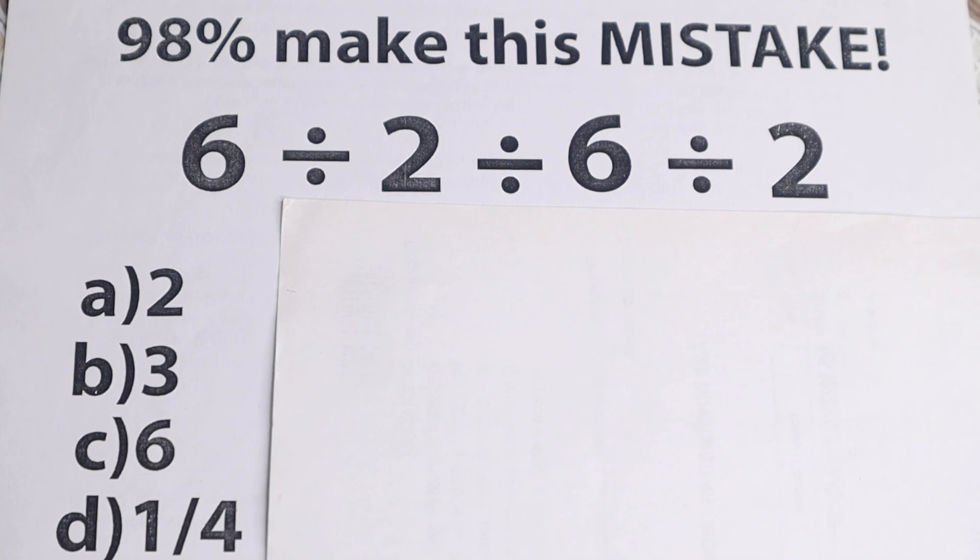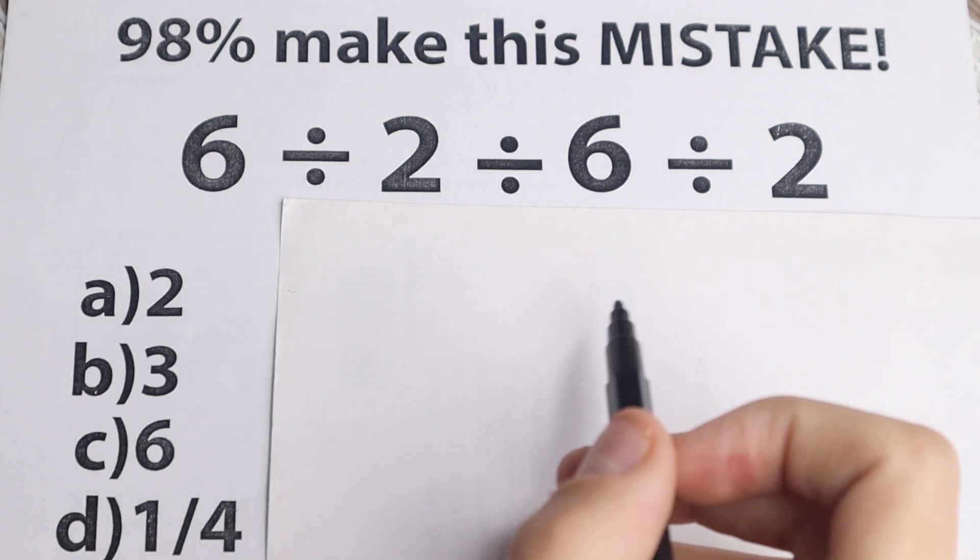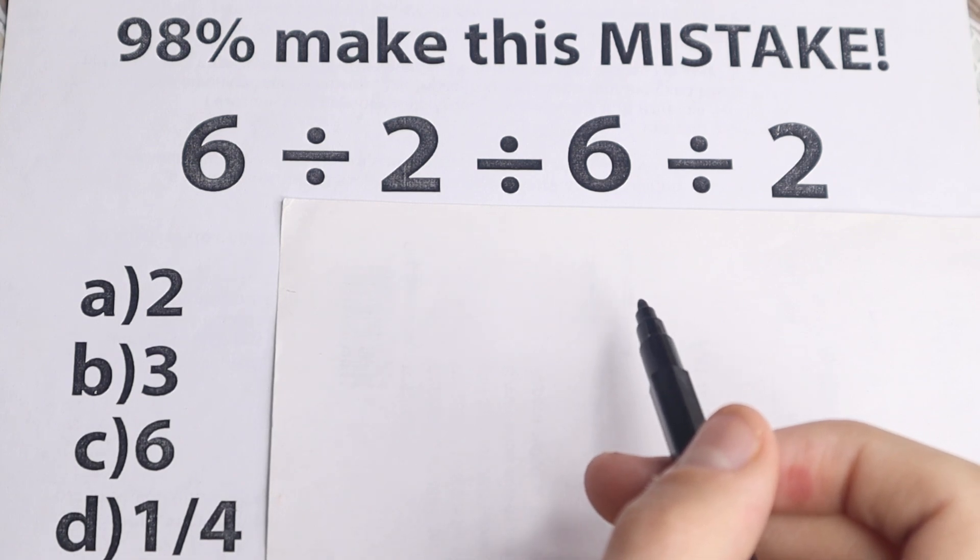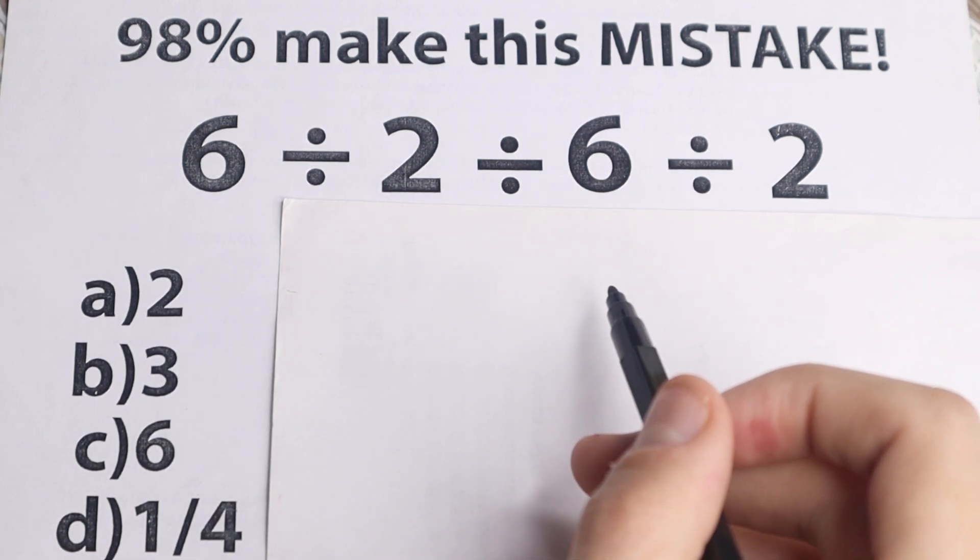Okay, so here is a problem today. We have 6 divided by 2 divided by 6 divided by 2. On the first sight, this problem is a very easy problem, we can easily solve it, a very simple problem, but a lot of students make this mistake, and I'm going to show this mistake here in just a second.